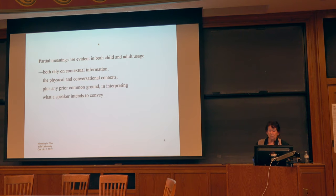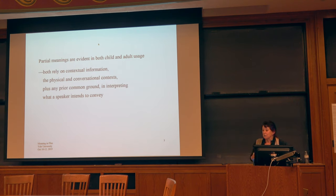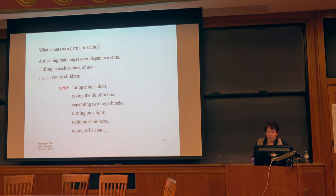Partial meanings can be found in both adult and child usage. In both cases they rely on contextual information — the physical and conversational contexts plus any prior common ground — in interpreting what the speaker intends to say. A partial meaning is one that can range over disparate events, shifting perhaps in each context of use.